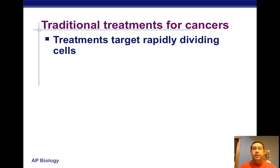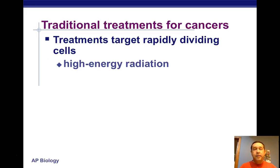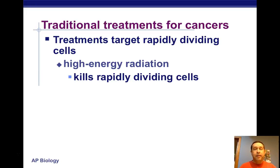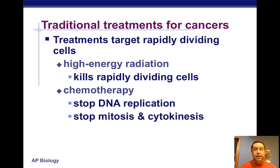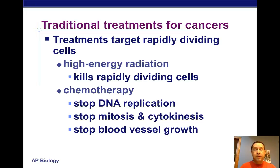The treatments we have for cancer target rapidly dividing cells, because that's what cancer cells are. High-energy radiation kills cells, but it kills healthy and cancer cells alike, so there are side effects. Chemotherapy uses chemicals that specifically target cells and stop DNA replication, stopping cell division, mitosis, and blood vessel growth, potentially shrinking the tumor. But any cells in the body that are dividing are affected — so things like hair fall out, and bone marrow, which divides to produce blood cells, is often affected, leading to anemia.